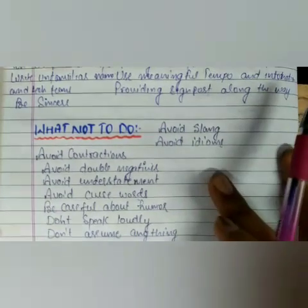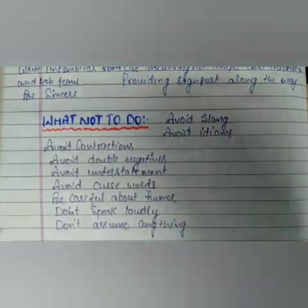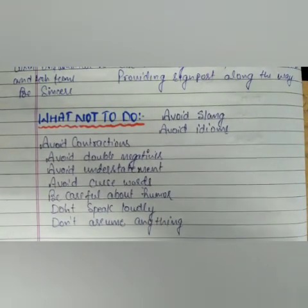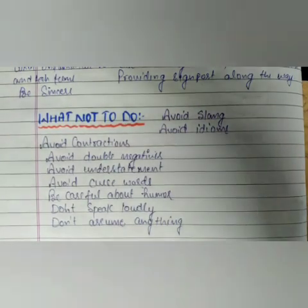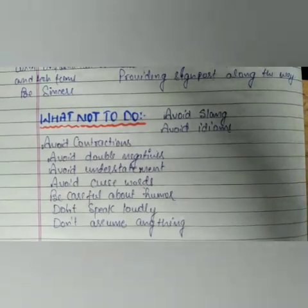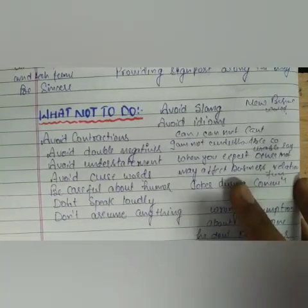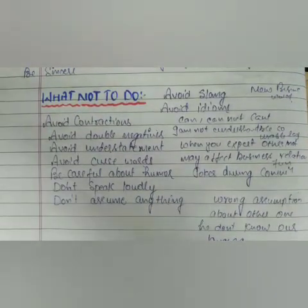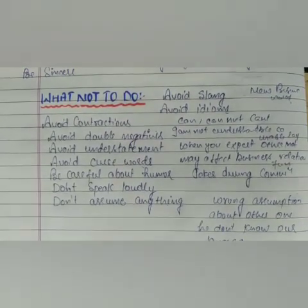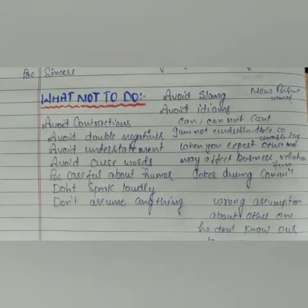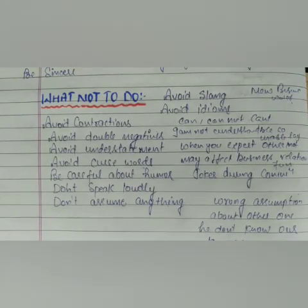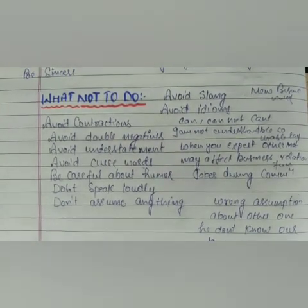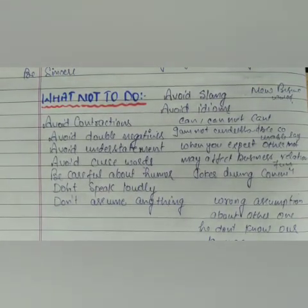Now, what not to do whenever you communicate with an external party — a person who belongs to another country or nation. The first point is: avoid slang. Whenever you communicate with an external party, avoid slang during communication. Slang means new or informal business words that a person not from your country may not be aware of and unable to understand — words that are very popular in your country but unfamiliar to others.